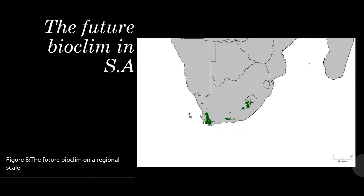This slide shows the future bioclim distribution in South Africa. It shows that favorability in South Africa is decreasing — there was more shading in the previous slide than in this one. On the global map, southern Europe was actually increasing. As the climate changes from now until 2050, it will become less and less favorable to have Umbrella Pine in South Africa.